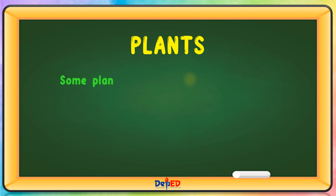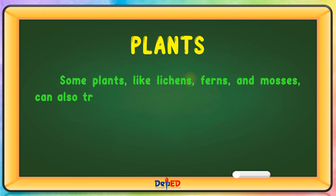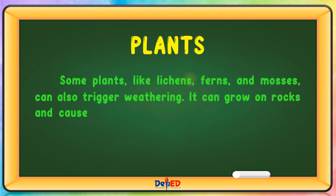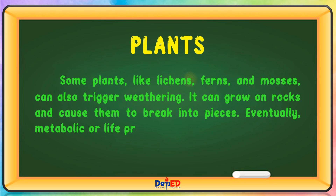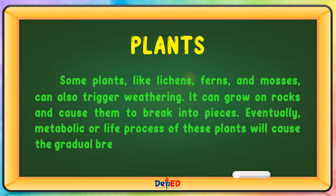Some plants like lichens, ferns, and mosses can also trigger weathering. They can grow on rocks and cause them to break into pieces. Eventually, the metabolic or life processes of these plants will cause the gradual breakage of rocks into smaller pieces.